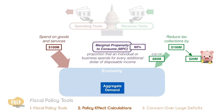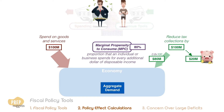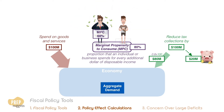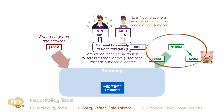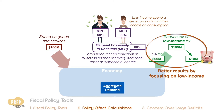In most economies, different segments of the population have different marginal propensity to consume. The low income may likely have a higher MPC as they tend to spend a larger proportion of income on consumption. As such, the government may get better results by focusing the tax cuts on the low income.